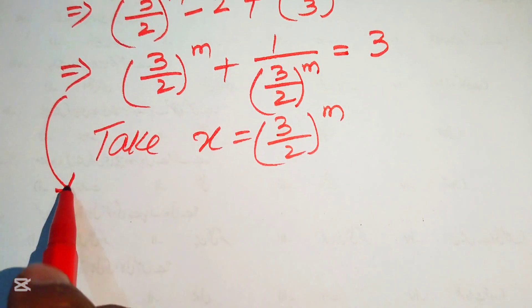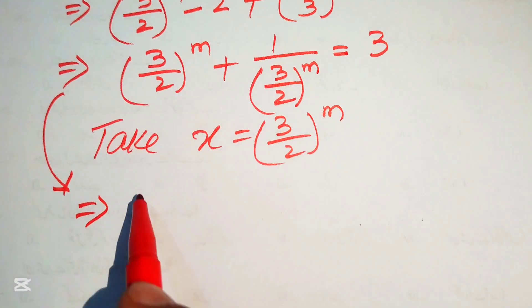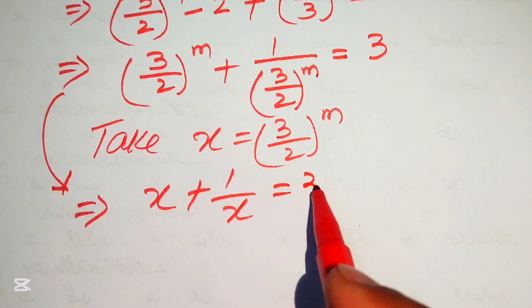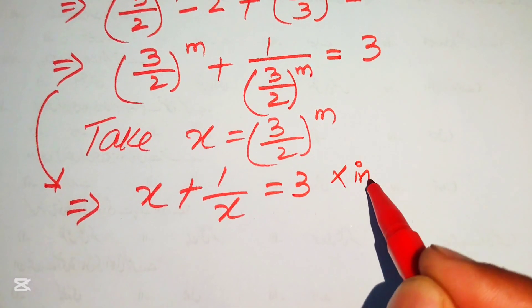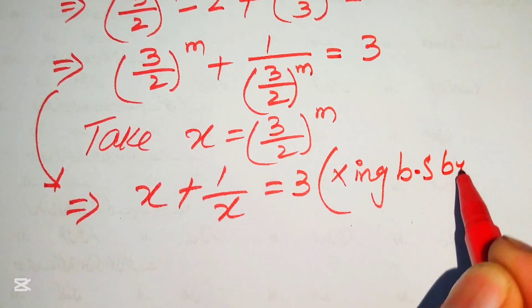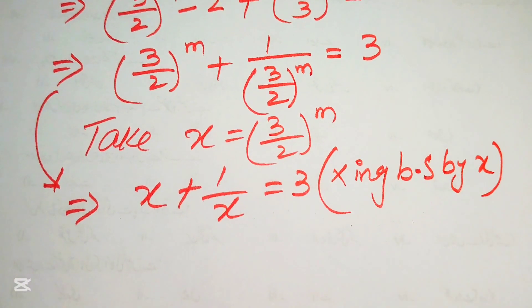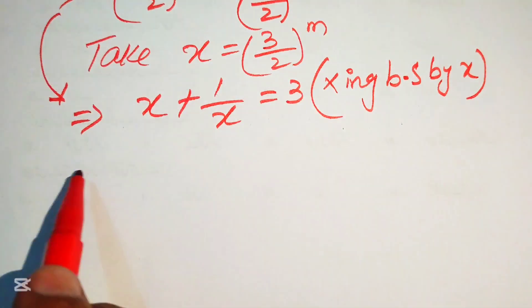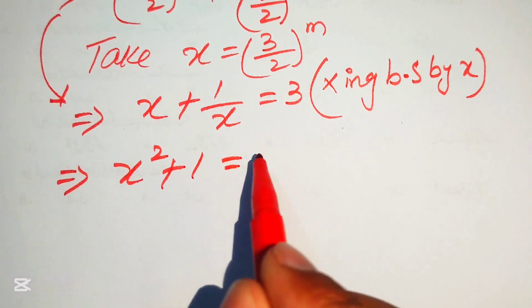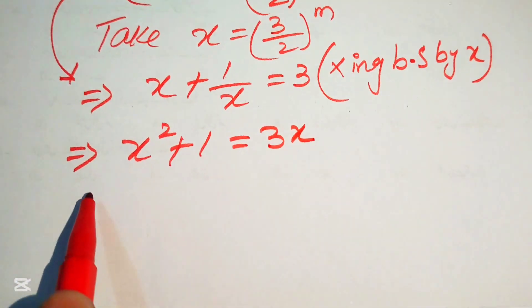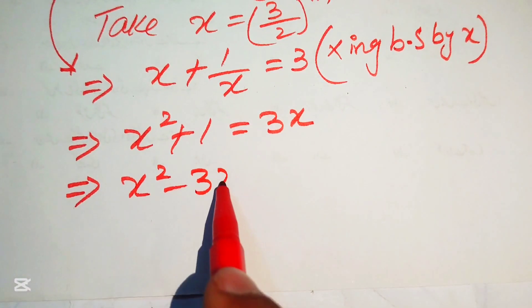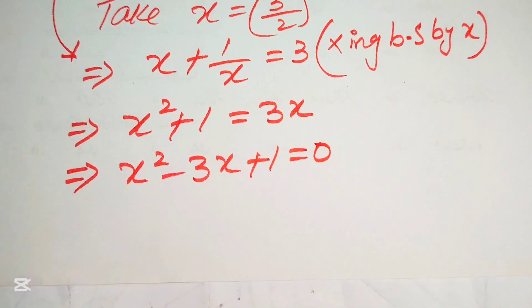We substitute x = (3/2)^m, so the equation becomes x + 1/x = 3. Multiplying both sides by x gives x² + 1 = 3x. Rearranging: x² - 3x + 1 = 0.